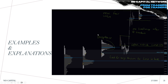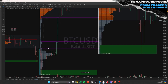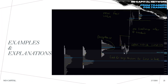Here's a screenshot from a gentleman on Twitter — shout out to Peter Mink — showing a great example. The profile opens outside the composite profile, comes back, gets accepted, and fills into that single print — the exact same principle I just explained. Look at the first print: price tested it, created a reversal, and went to find new fair value.